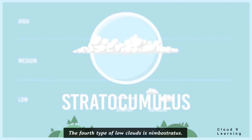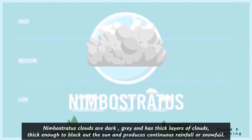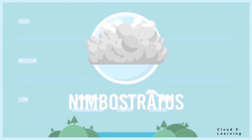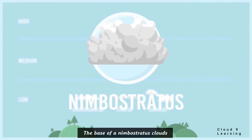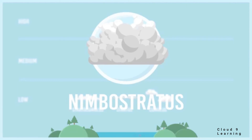Nimbostratus clouds are dark gray and have thick layers, thick enough to block out the sun, and produce continuous rainfall or snowfall. The base of a nimbostratus cloud can be found relatively close to the ground, but the top can extend upward to the middle cloud level.